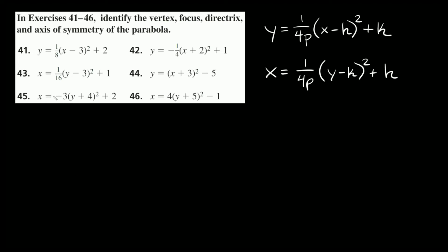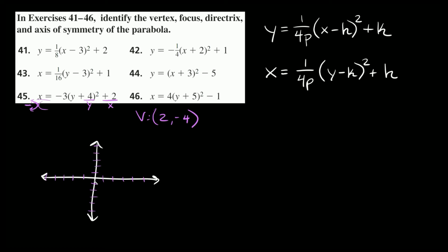Now problem 45: x equals negative 3 times y plus 4 squared plus 2. We have x equals, so it opens left or right. We have a negative number, so it opens to the left. For x equals, our vertex coordinates are flipped: this is our y coordinate and this is our x coordinate. Taking the opposite sign of y gives vertex at (2, negative 4). The axis of symmetry runs straight through the vertex at y equals negative 4.